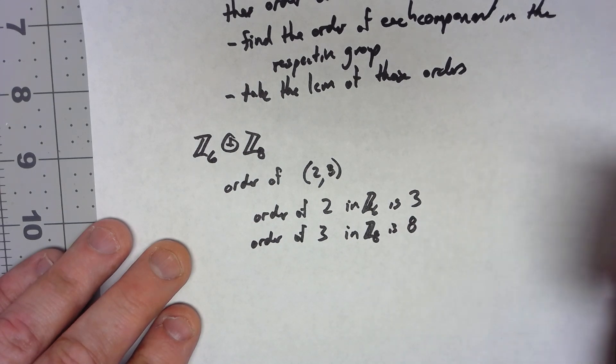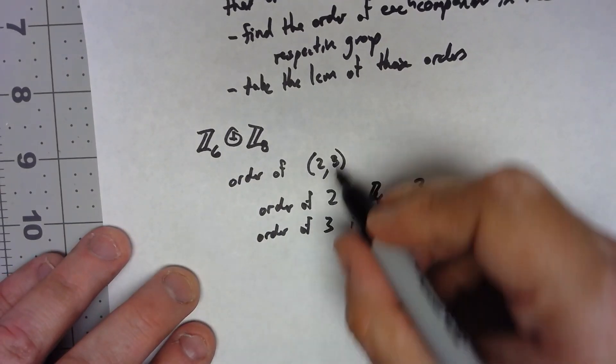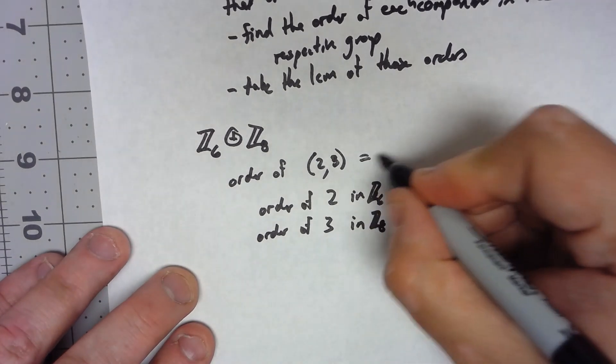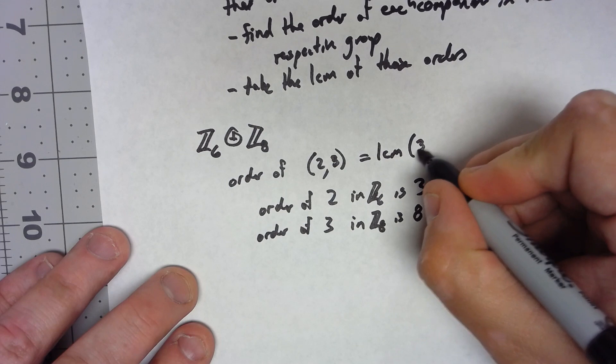So the order of (2,3) is the LCM of 3 and 8, which would be 24.